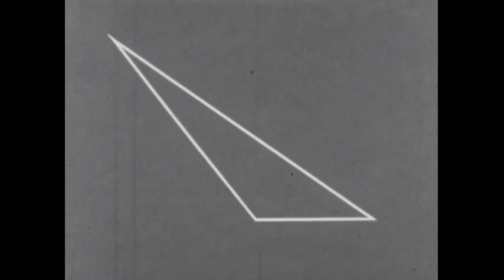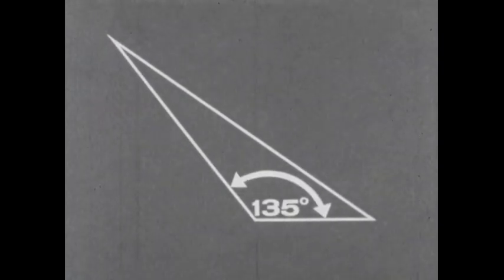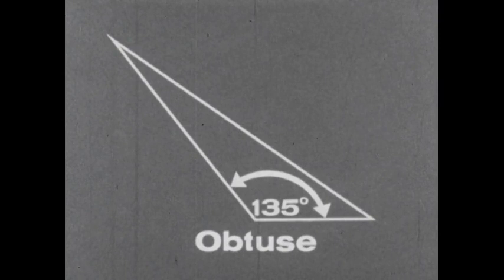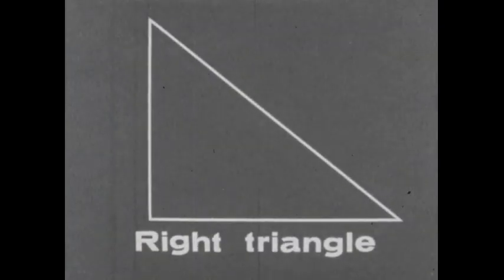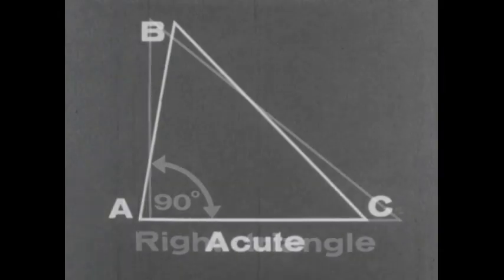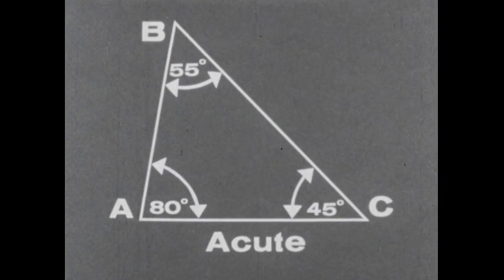Since this triangle has one obtuse angle, that is one angle which measures more than 90 degrees, it can be called an obtuse triangle. A right triangle is a triangle having one right angle. An acute triangle is a triangle that has three acute angles, that is, the measure of each is less than 90 degrees.